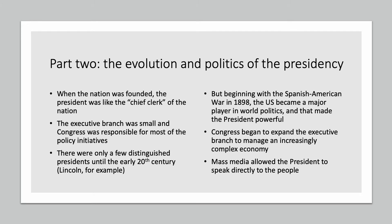Government was mainly done by the states. The federal government had certain limited responsibilities — foreign policy, war, etc. The Constitution made the U.S. government more powerful than it had been previously, but still the executive branch was quite small and Congress was responsible for making most of the decisions. Through its legislative function, Congress was doing most of the governing, and that actually is the way the founders envisioned it at first.